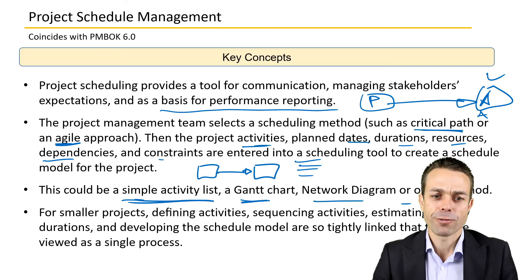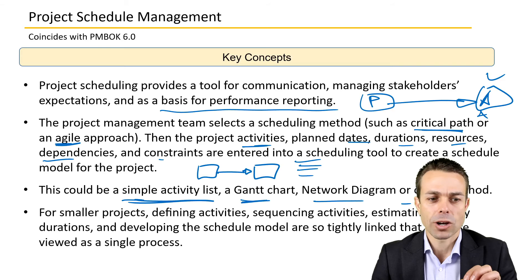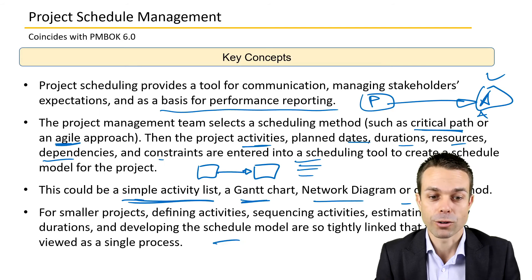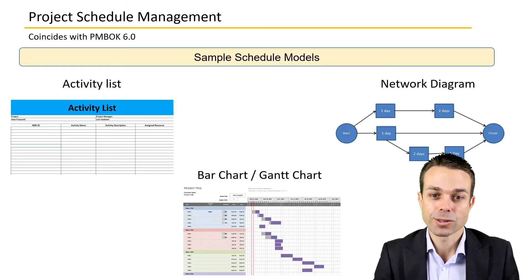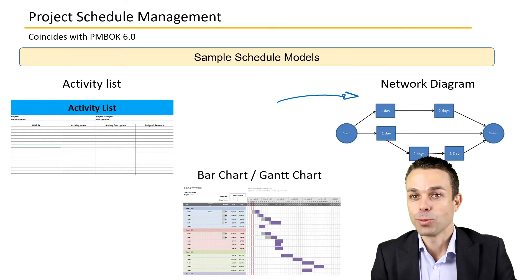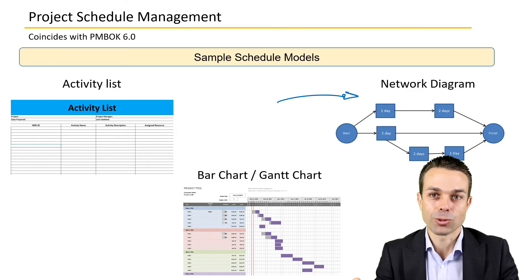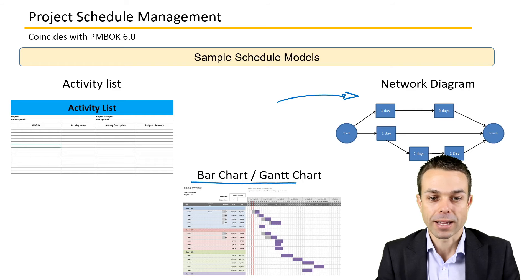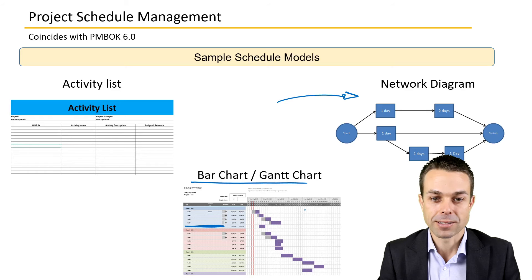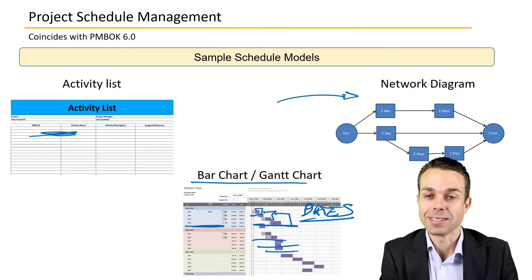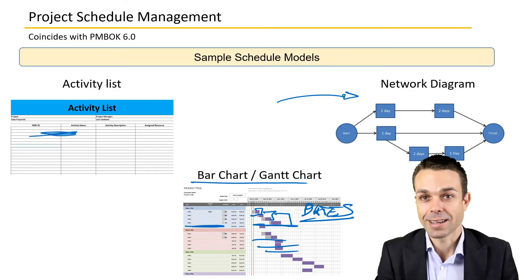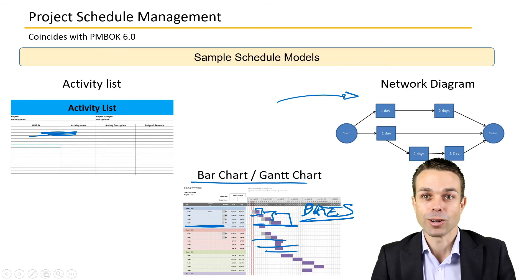The schedule model could be a simple activity list — just activities generated and written down — a Gantt chart, a network diagram, or any other method. For smaller projects, defining and sequencing activities are so tightly linked they could all be done as a single process. Example schedule models include the network diagram, used for calculating the critical path — the shortest duration in which the project can be completed — and the bar or Gantt chart, showing activities, dates, and durations very clearly.